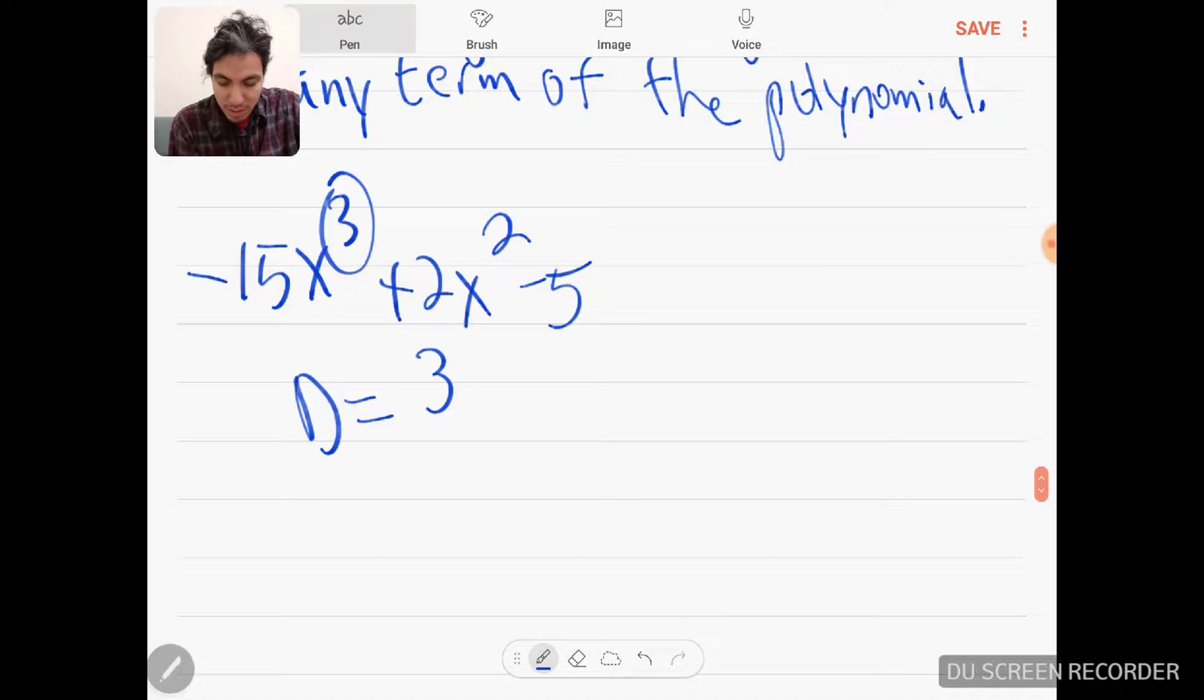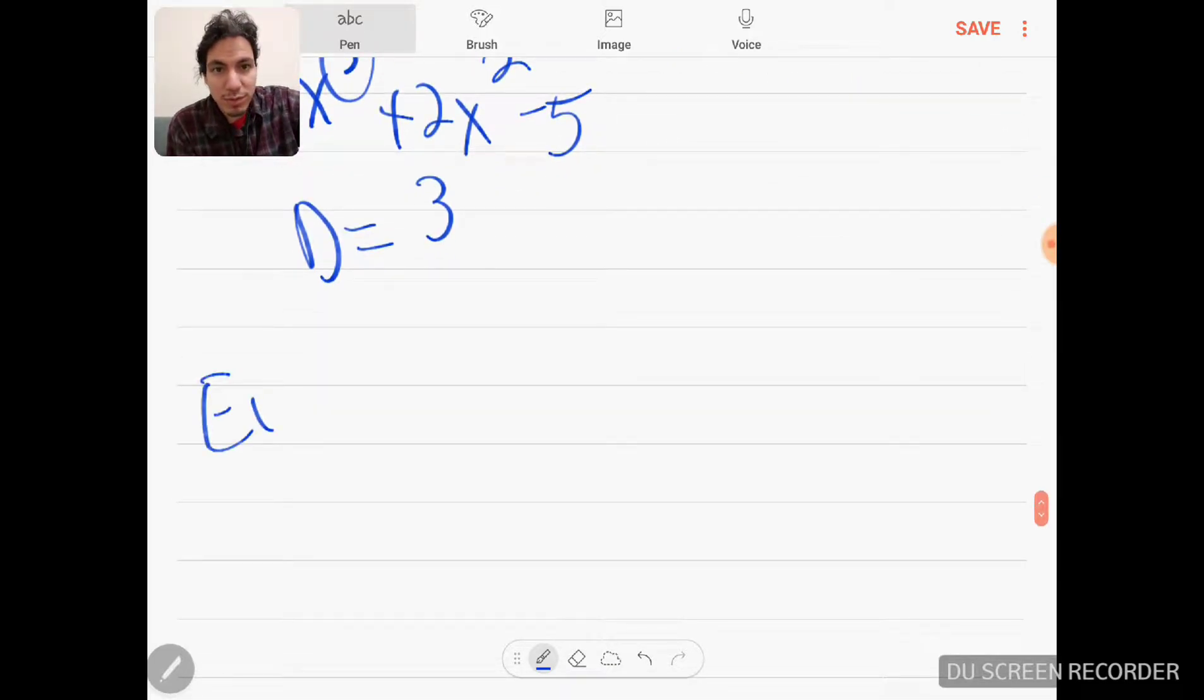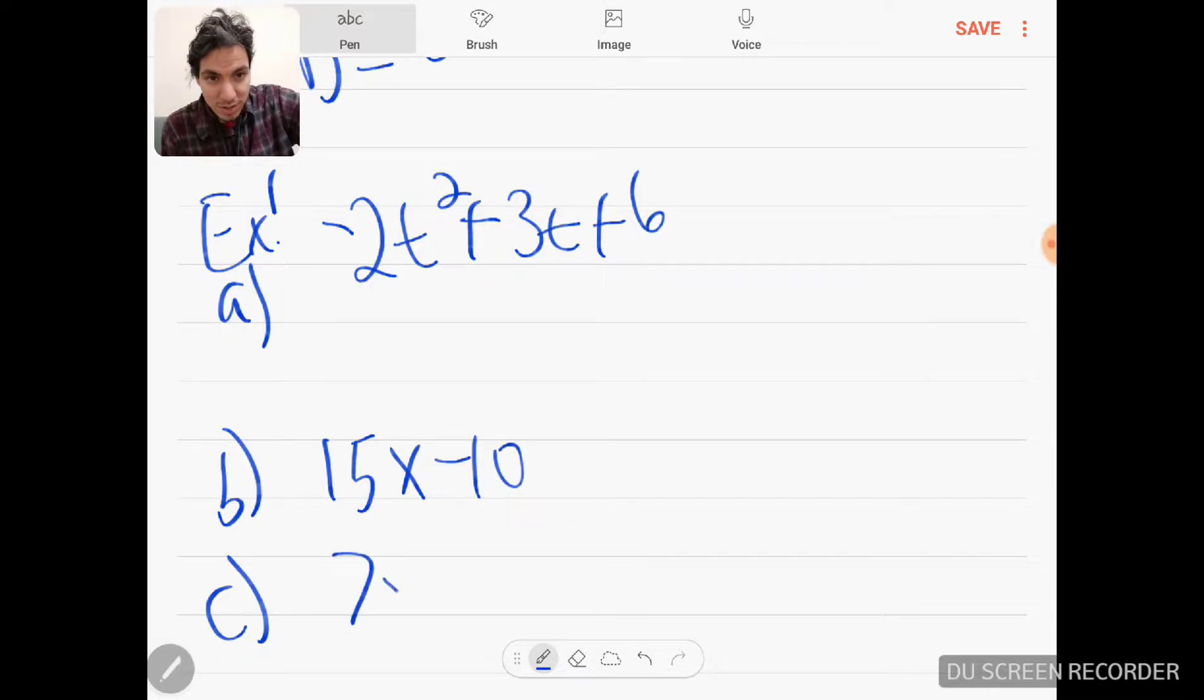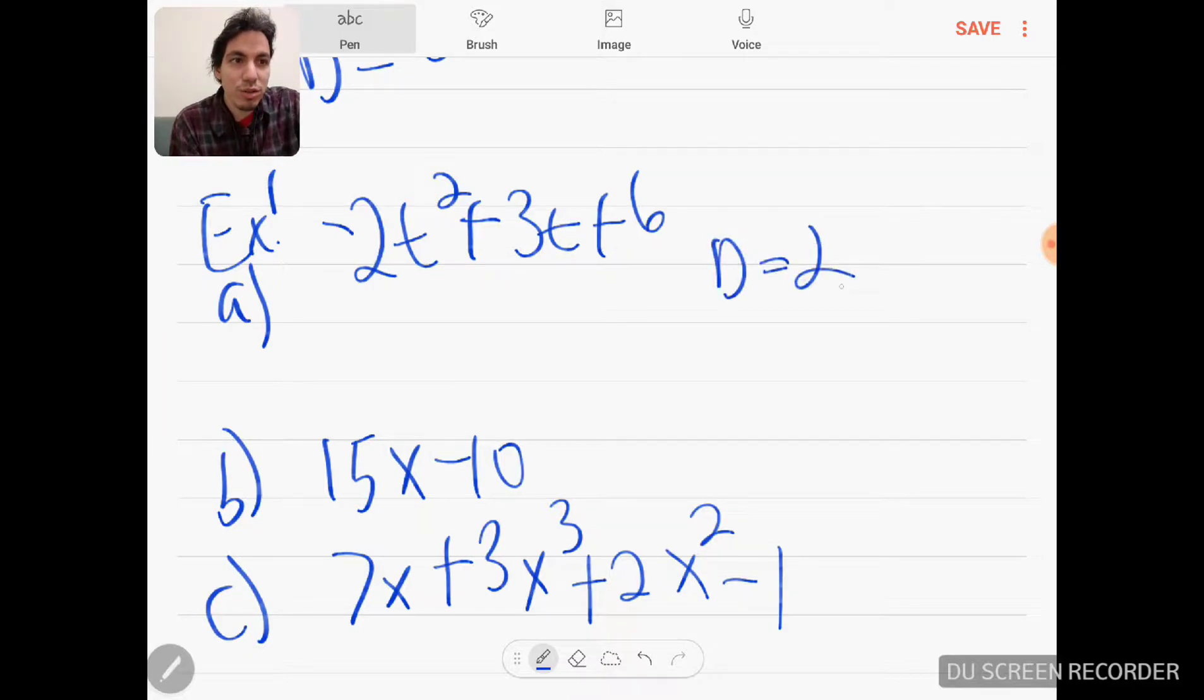How about if I gave a whole bunch of different ones? Let's say I gave -2t^2 + 3t + 6. This is the first example, this is the second example, this is the third example. And this one's 7x + 3x^3 + 2x^2 - 1.